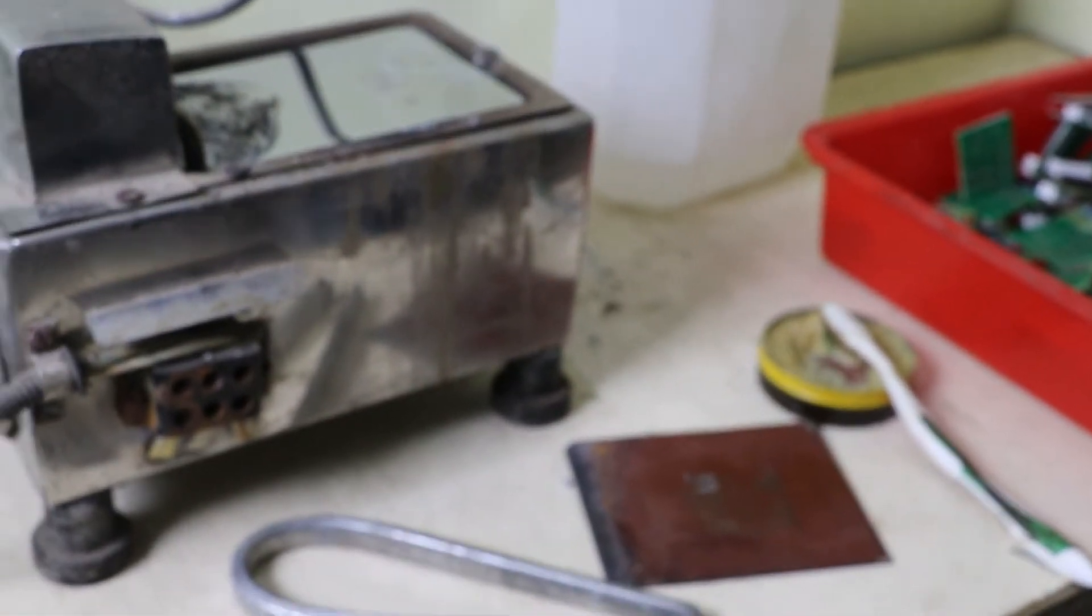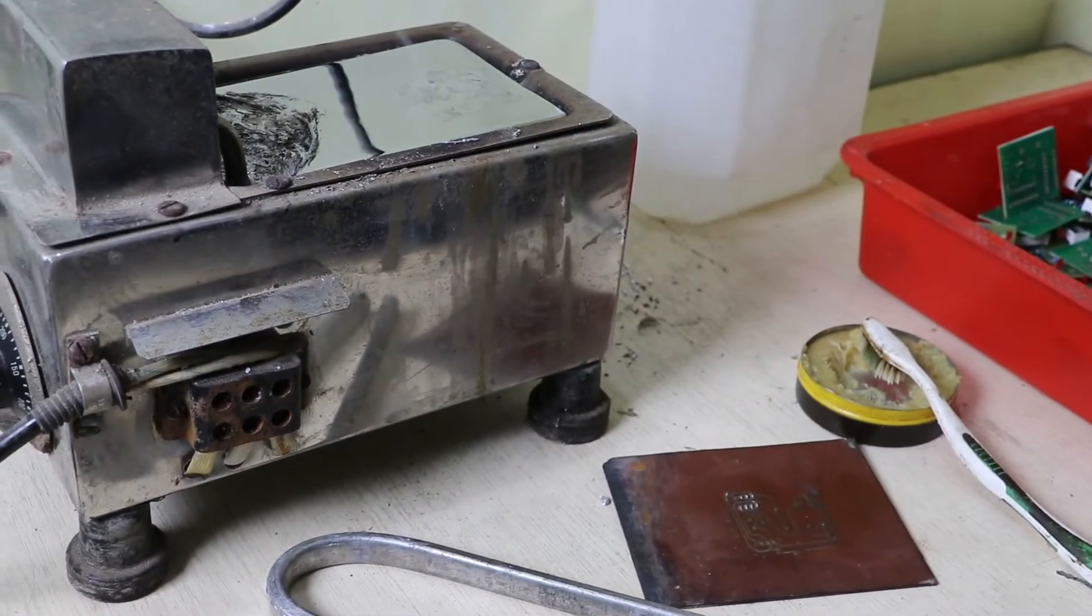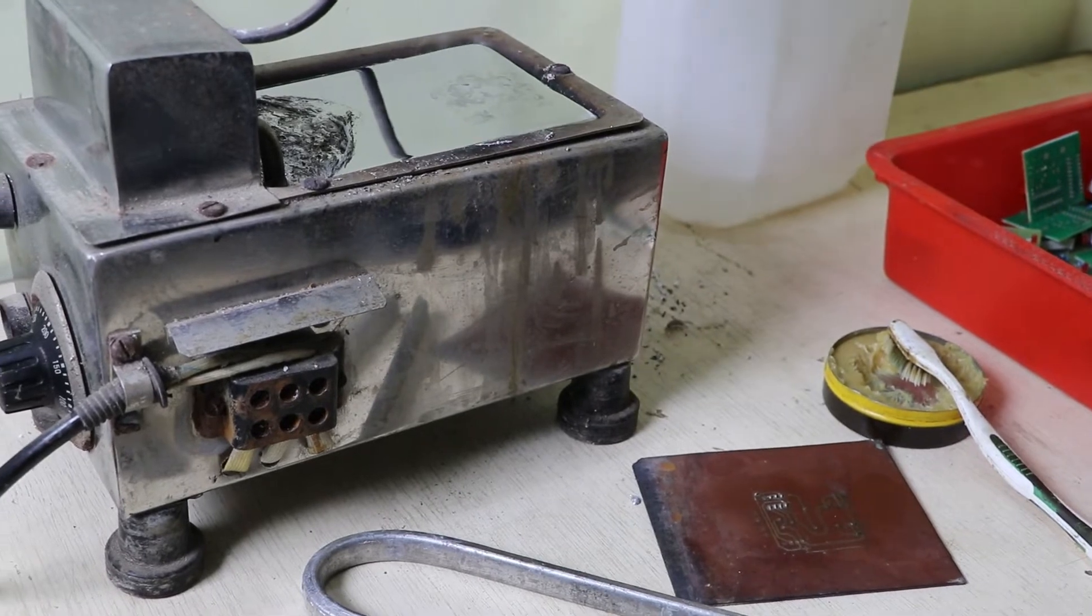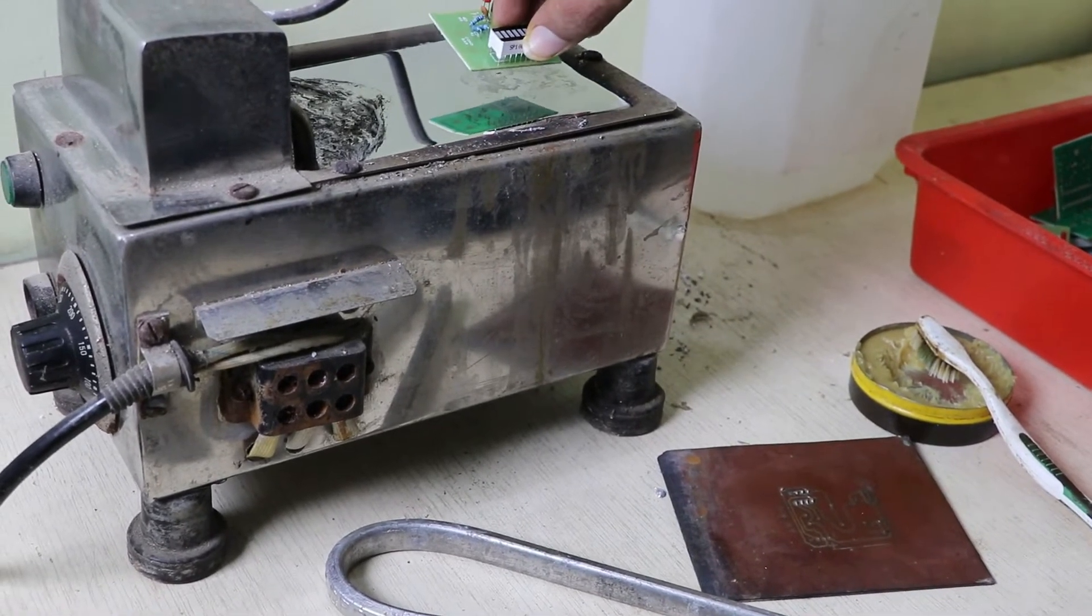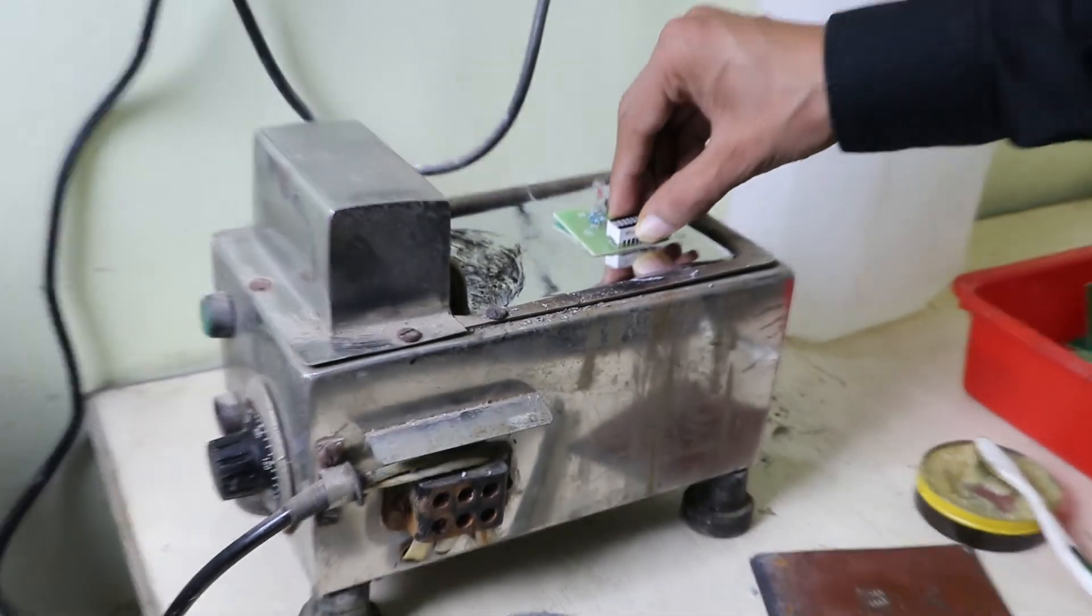This way, extra solder will run off from the bottom of the PCB. You can see a waste layer on top of the molten solder - remove it from time to time.